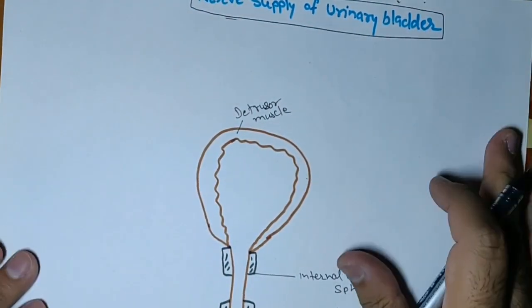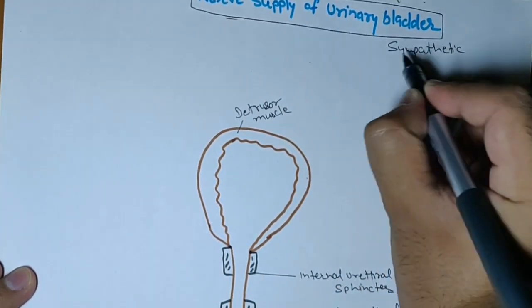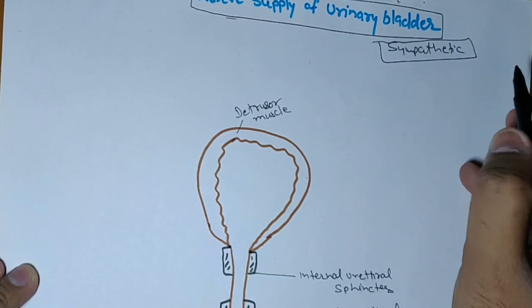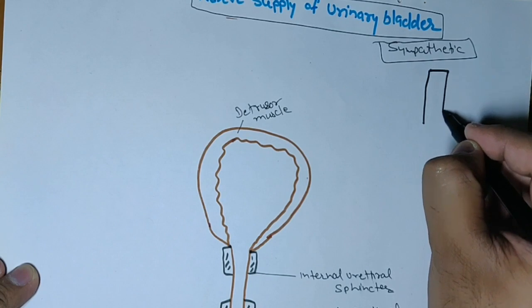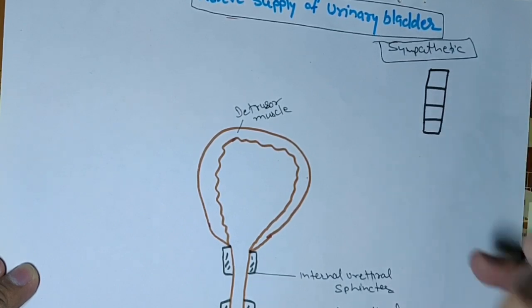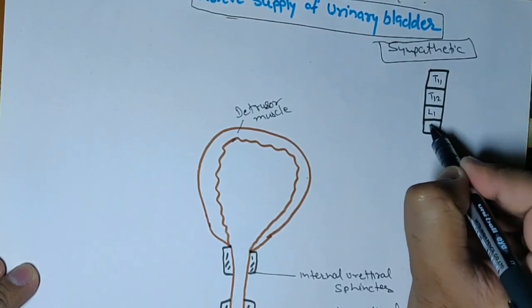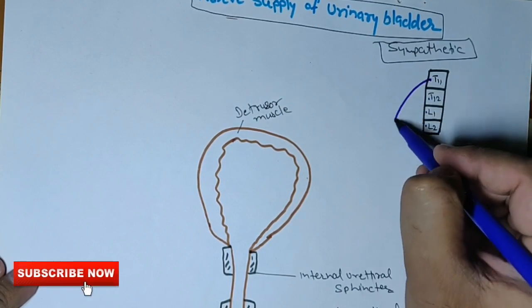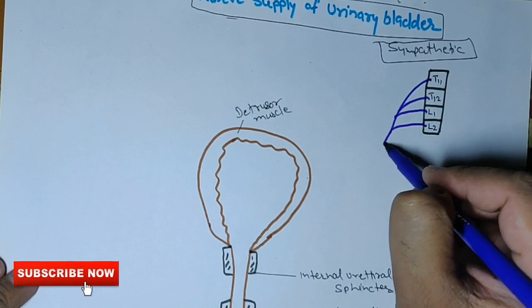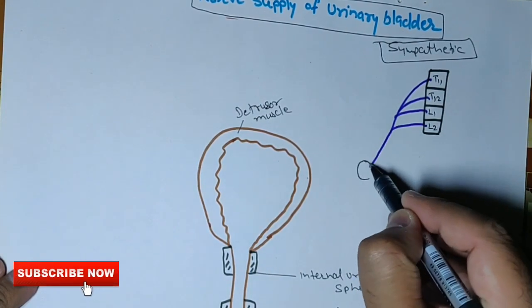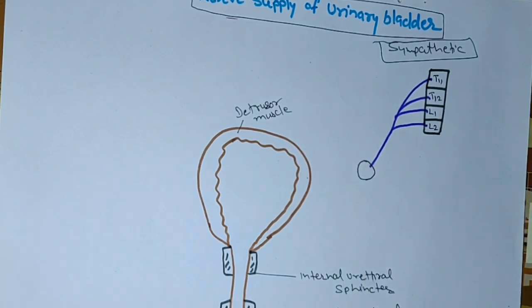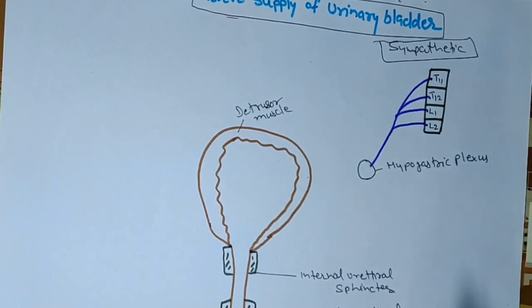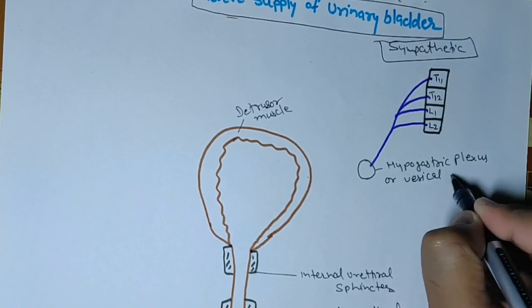Now first we will start with the sympathetic innervation. The sympathetic supply will come from four spinal segments: T11, T12, L1, and L2. These are the pre-ganglionic fibers arising from T11 to L2, and this pre-ganglionic fiber will relay at the hypogastric plexus, also known as the vesical plexus.